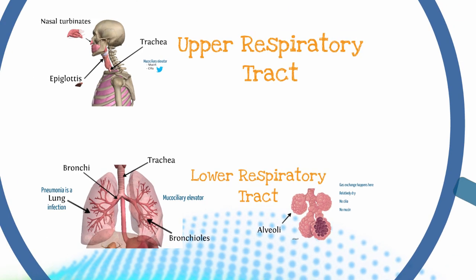Let's quickly review. We've got our upper respiratory tract starting off with the nasal turbinates, going past the epiglottis into your trachea, and the mucociliary elevator that traps foreign particles — cilia move that trapped particle fluid up through your trachea to your epiglottis, where you either cough it up or swallow it back down. Then going down through the trachea, we have our bronchi, which separate into bronchioles, which separate more and more until we form alveoli, where gas exchange happens. It's a relatively dry environment and the mucociliary elevator does not exist at the level of the alveoli. Pneumonia is a lung infection, so it is a lower respiratory tract infection.